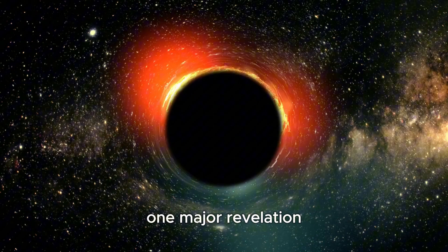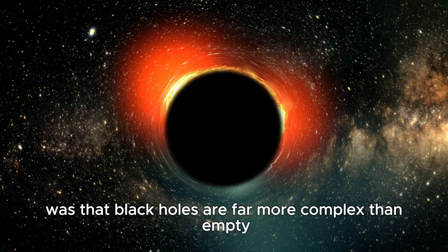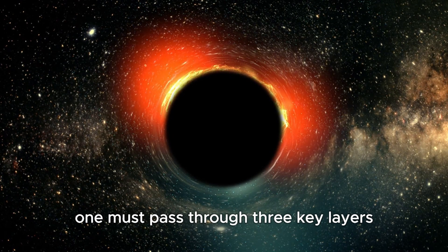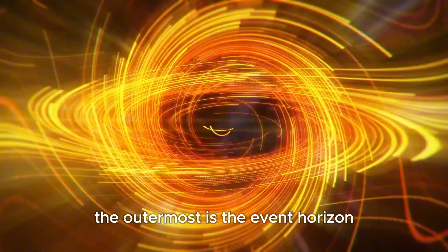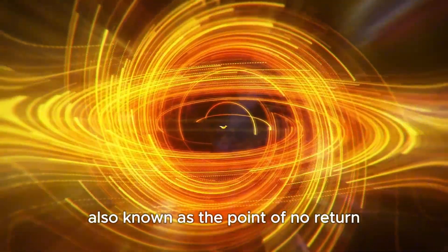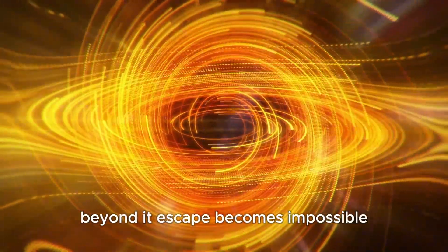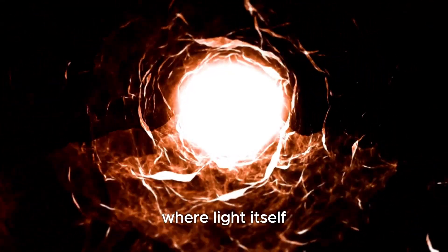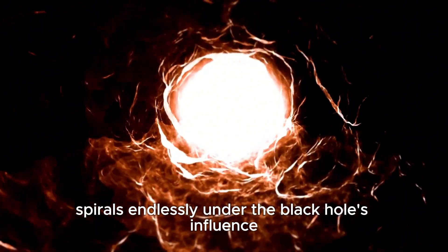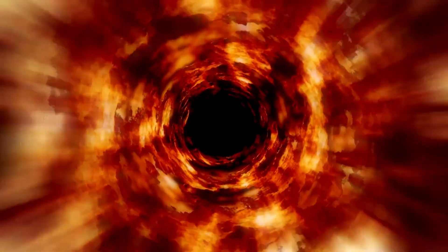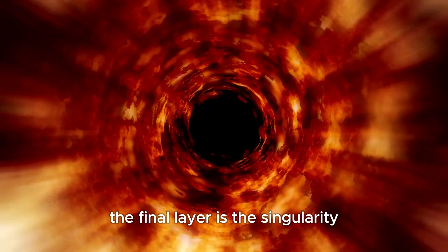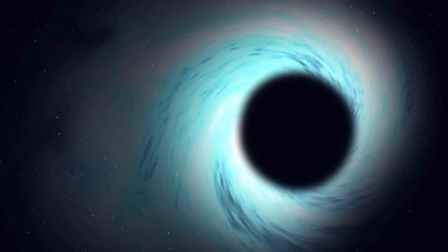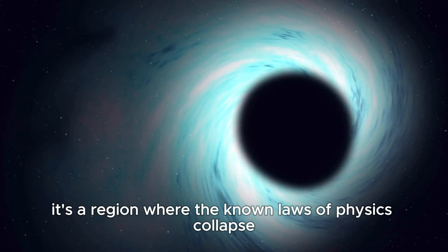One major revelation was that black holes are far more complex than empty cosmic voids. To reach the heart of a black hole, one must pass through three key layers. The outermost is the event horizon, also known as the point of no return. Beyond it, escape becomes impossible. Next is the photon sphere, where light itself spirals endlessly under the black hole's influence. The final layer is the singularity, a location where everything is condensed into a point of infinite density. It's a region where the known laws of physics collapse.